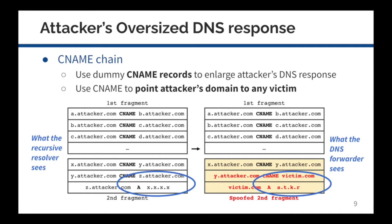Using CNAME, it is possible to point the attacker's domain to any victim domain. The attacker's goal is for the DNS forwarder to cache the last A record separately, which points the victim domain to a rogue address. The forged response will be rejected by a recursive resolver because the tampered CNAME chain will not pass verification. However, as DNS forwarders lack such checks, they are vulnerable to this attack.